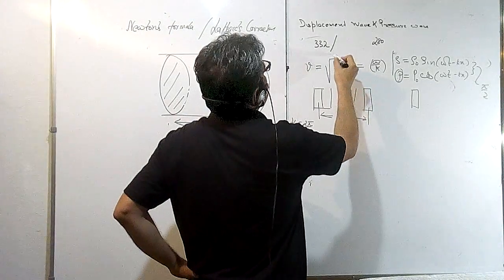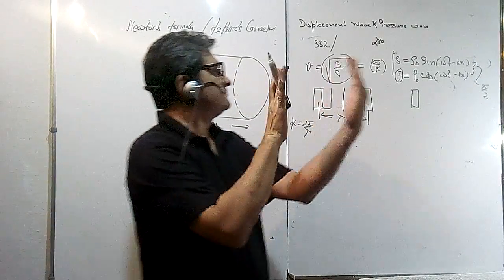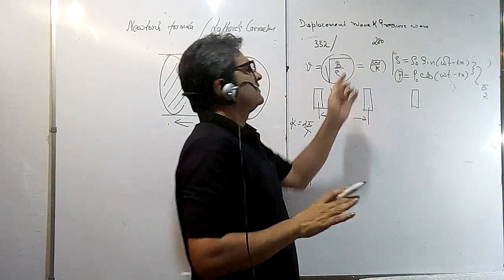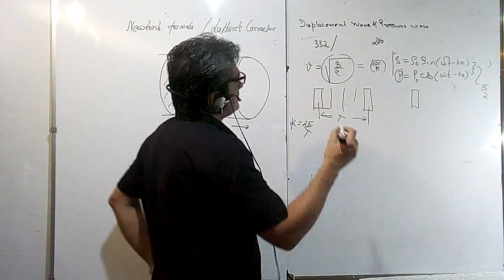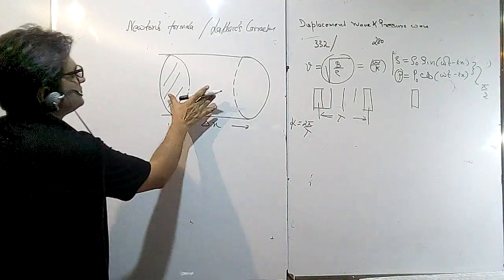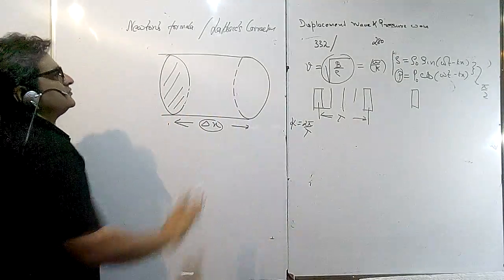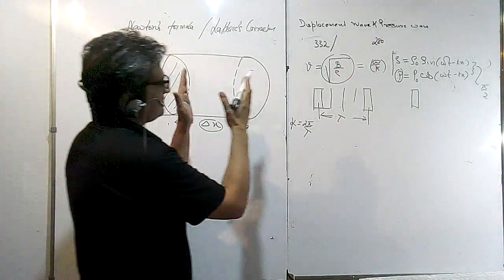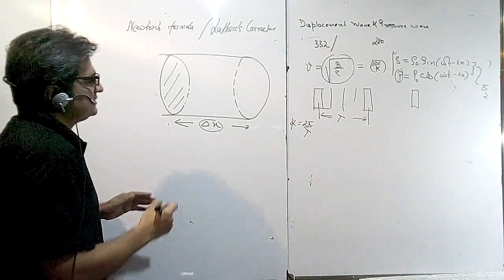Now we have derived that this speed of sound, which is a longitudinal wave in any medium, depends on the bulk modulus and on the density of the medium. Newton presumed that when this is moving—let us take an element Δx—when this is moving in a medium in terms of wave compression and rarefaction, he assumed that the temperature remains constant.